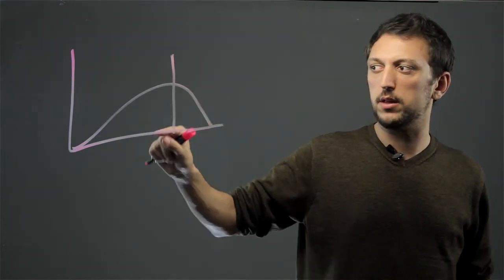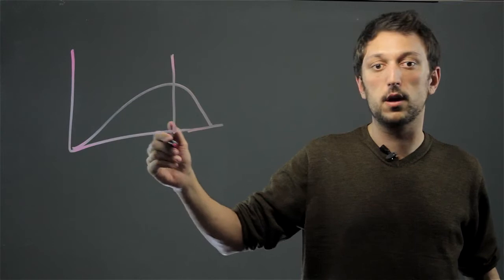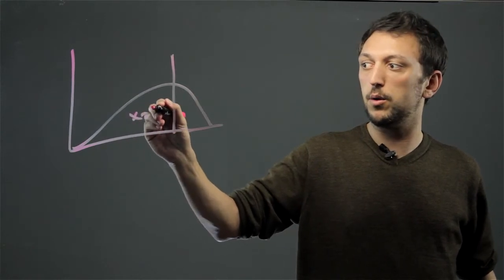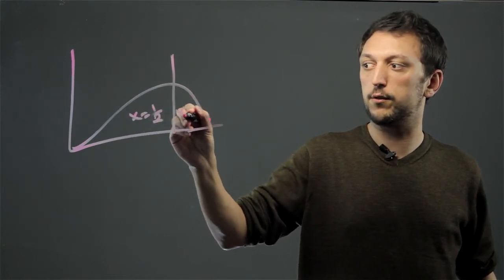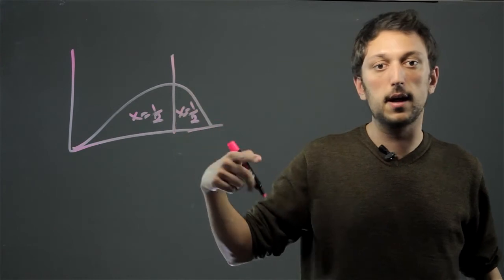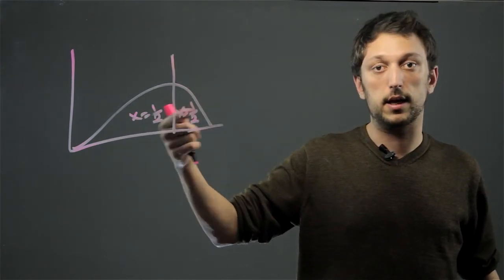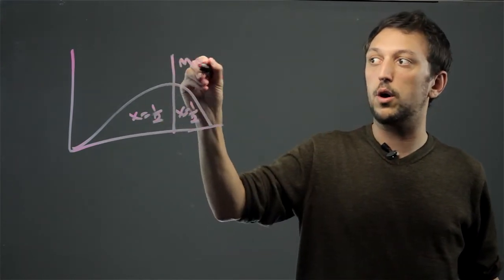So this drawing is a little inaccurate, it might be a little to the left, but if this was one half, then this would also be one half, and the area under the curve is now split exactly in two. So that's our median.